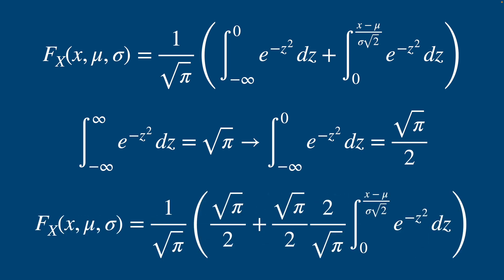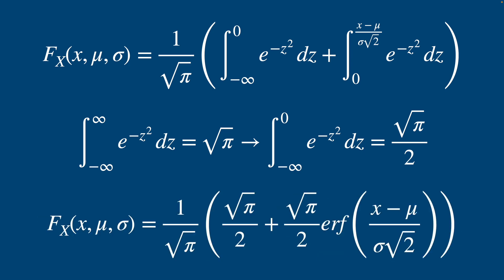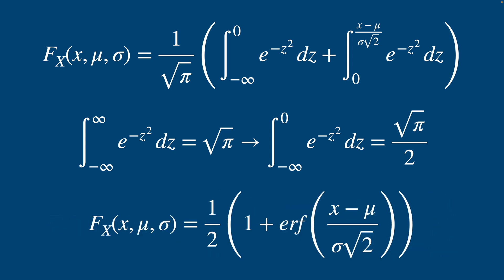We'll multiply our rightmost integral by 1 in the form of √π/2 times 2/√π. You can notice that's literally our original error function from the first slide, so we plug that in. Taking our √π/2 out, we make more progress.